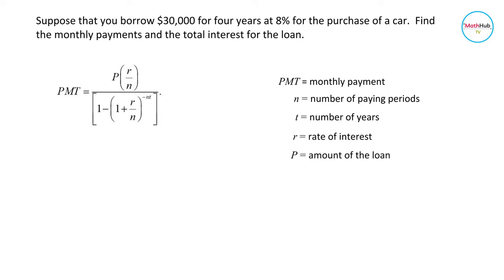Now going back to the problem, let us identify the values of the variables here. So $30,000 is our P, that's the principal amount borrowed. And 4 years here will be your T, so that's the number of years.